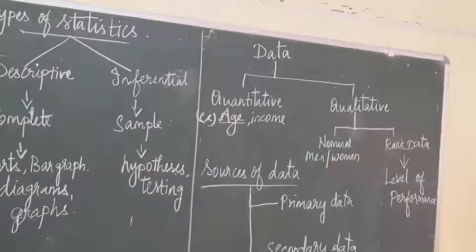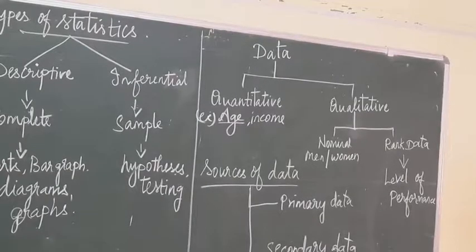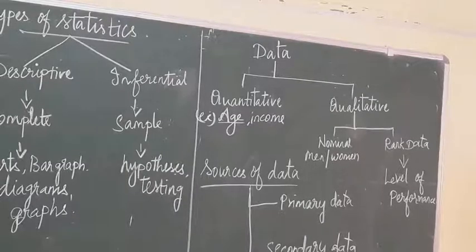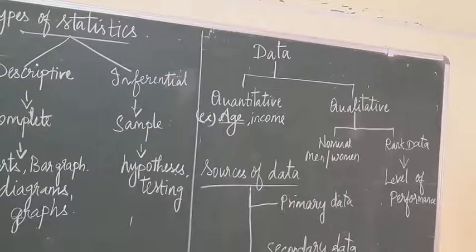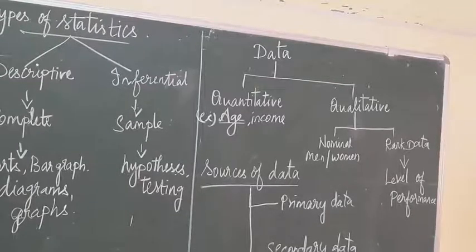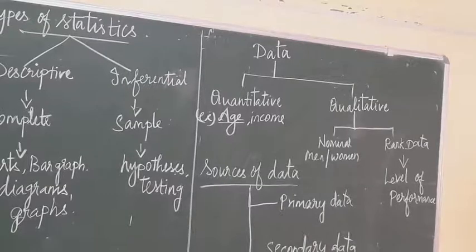Now, sources of data — how are we getting this data, and who is in charge of collecting it? That organization is called CSO — the Central Statistical Organization. They are the authority for releasing statistical data. We are going to study where the data comes from and who is responsible for collecting it under the heading of sources of data.